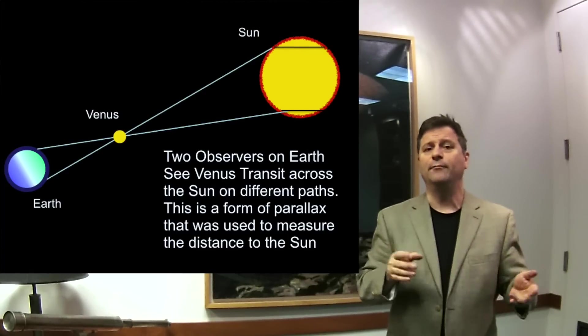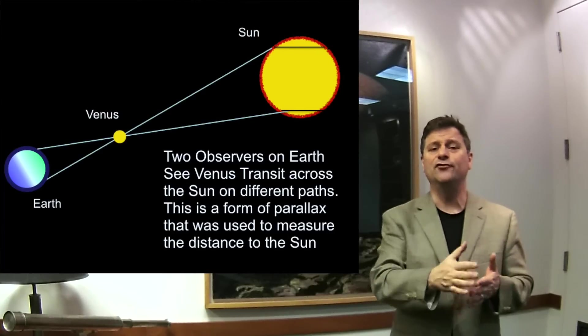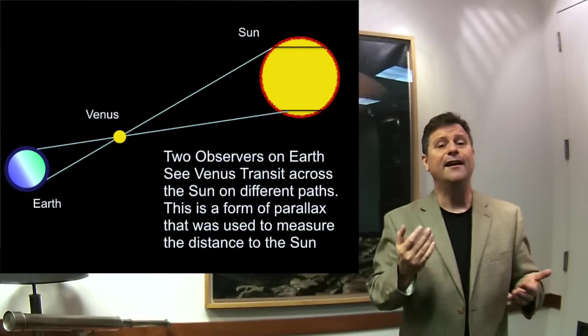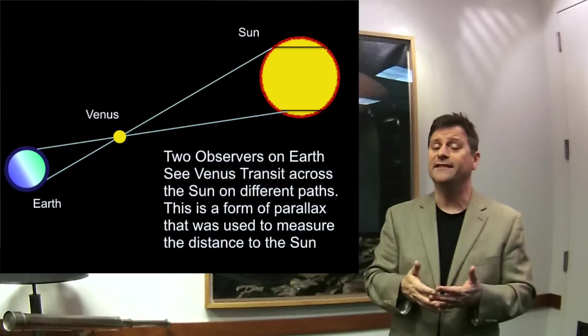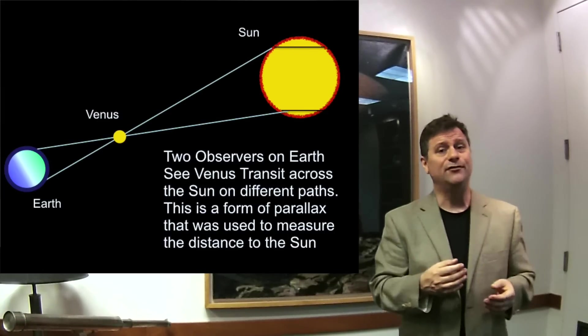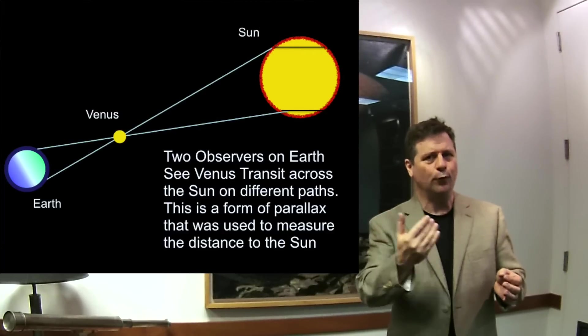To check the timings of the transits across Venus. And that can give you a parallax of Venus with respect to the sun. And that parallax gives you distance. So this is a really interesting thing. But how do we get that? How do we know that that works?